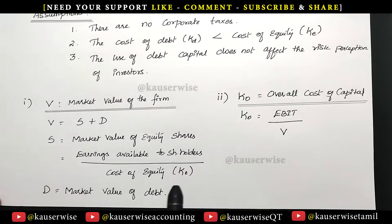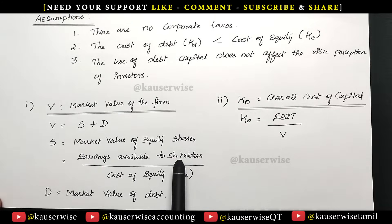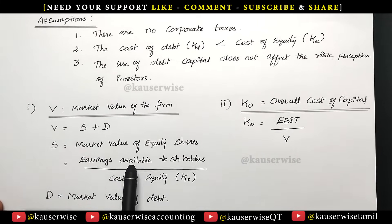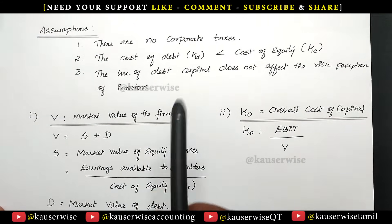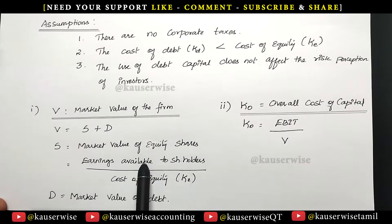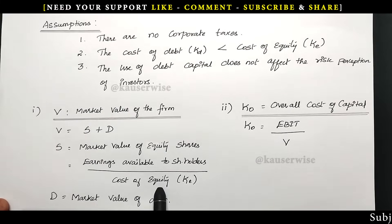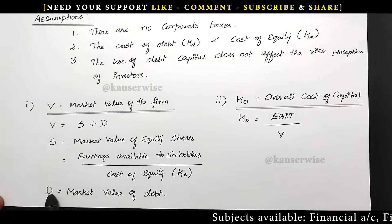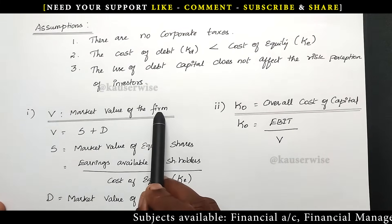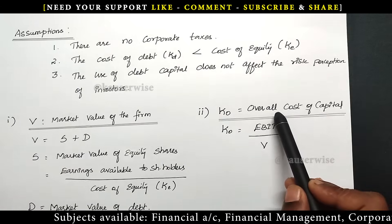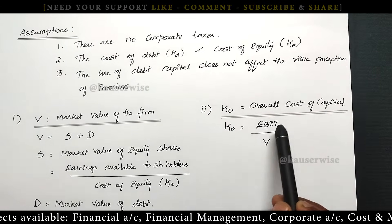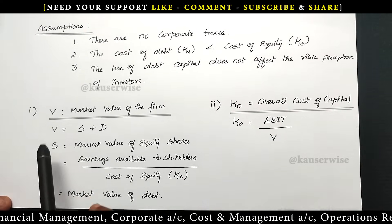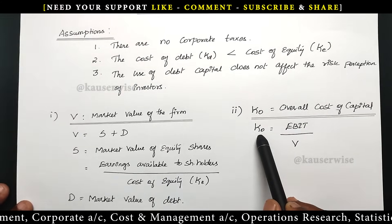KE will be given in the problem. To find earnings available to equity shareholders, the formula is EBIT minus interest. Since there is no corporate tax in the net income approach, after paying interest whatever profit is available is the entire earnings available to equity shareholders. Divide that by KE to find S, then add D to get V. The second component is KO, the overall cost of capital, which equals EBIT divided by V. After finding V, apply this formula to find the overall cost of capital.